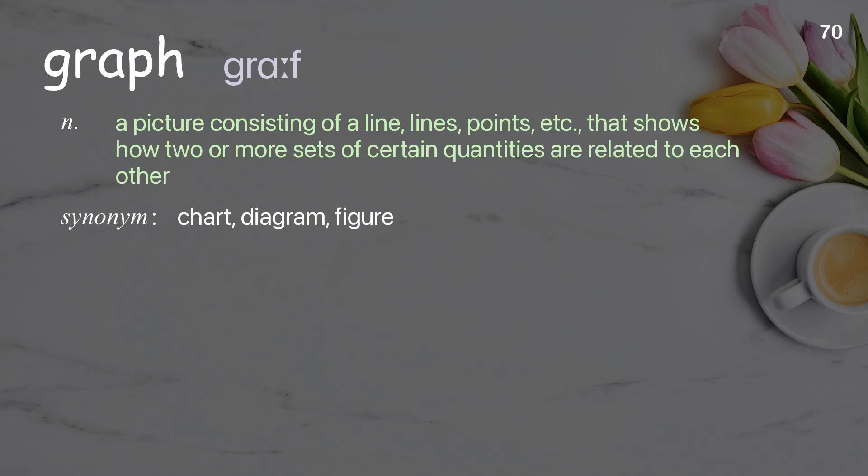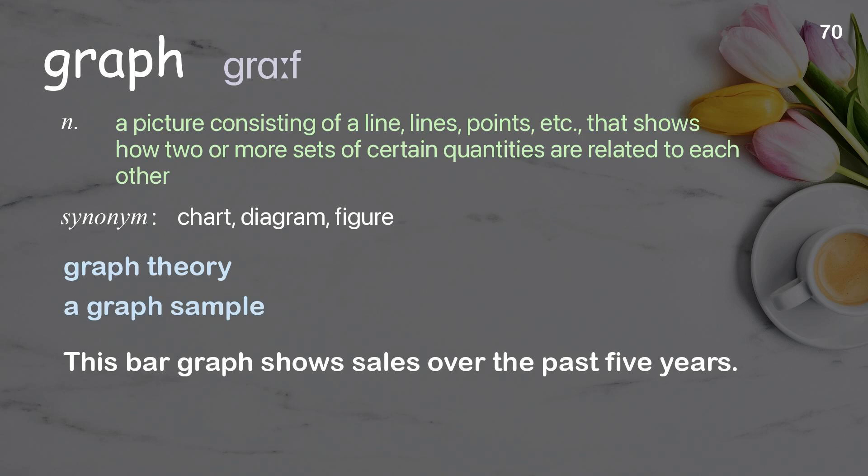Graph: a picture consisting of lines, points, etc., that shows how two or more sets of certain quantities are related to each other. Examples: graph theory; a graph sample. This bar graph shows sales over the past five years.